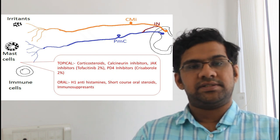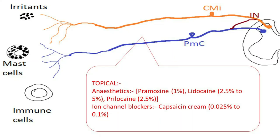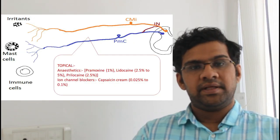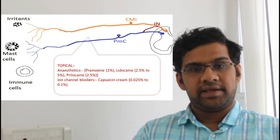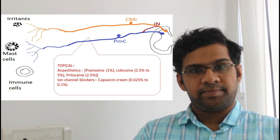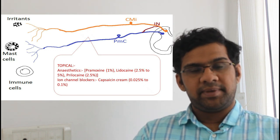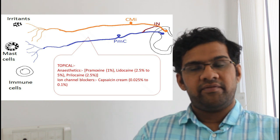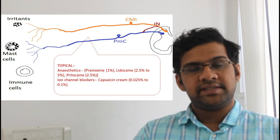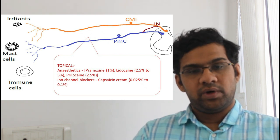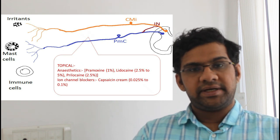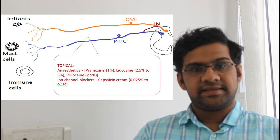Another way of tackling peripheral transmission of itch is by numbing the nerve fibers. This is done by applying local topical anesthetics. As we already discussed, pain decreases the itch sensation, so application of capsaicin, which is an active ingredient in chilies, at lower dosages help in triggering the pain sensation which is very mild and help in decreasing the itch sensation.